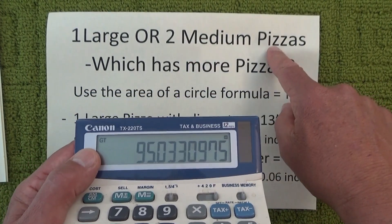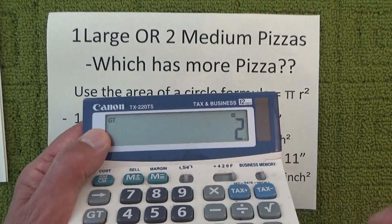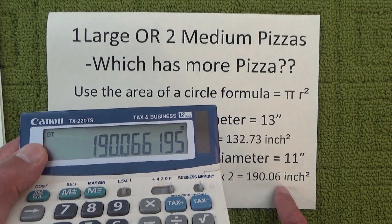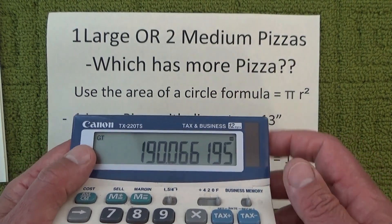But we're interested in two medium pizzas, so we just multiply the 95 by 2 and we end up with 190 square inches as the area of two medium pizzas.